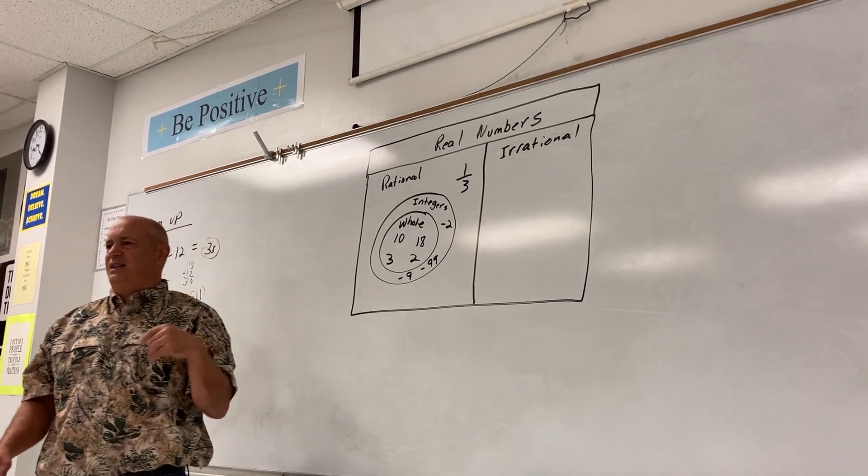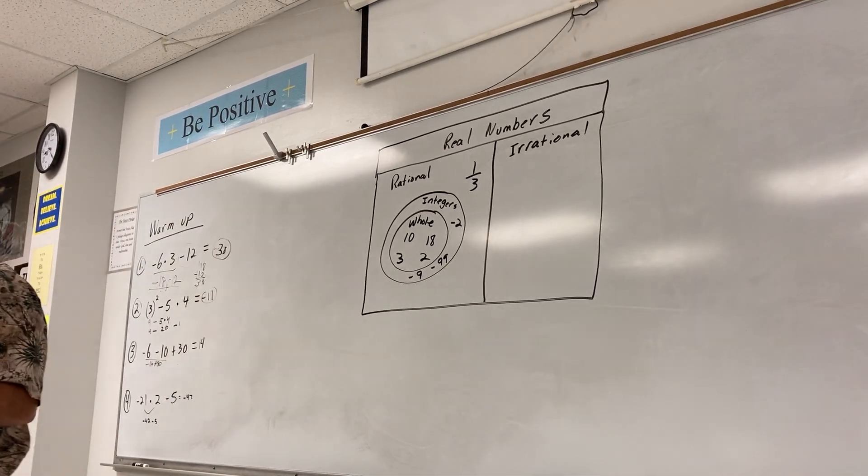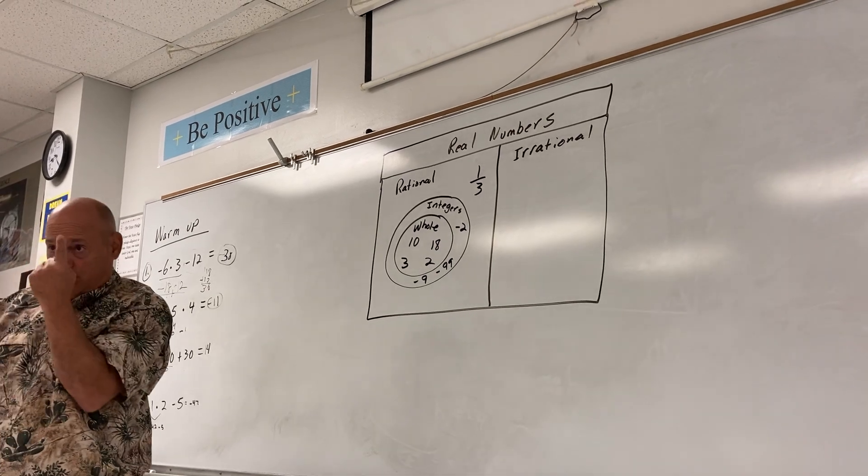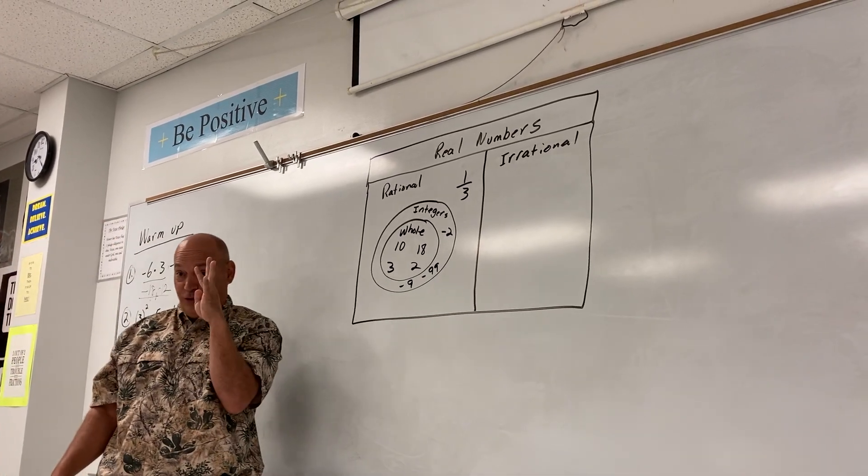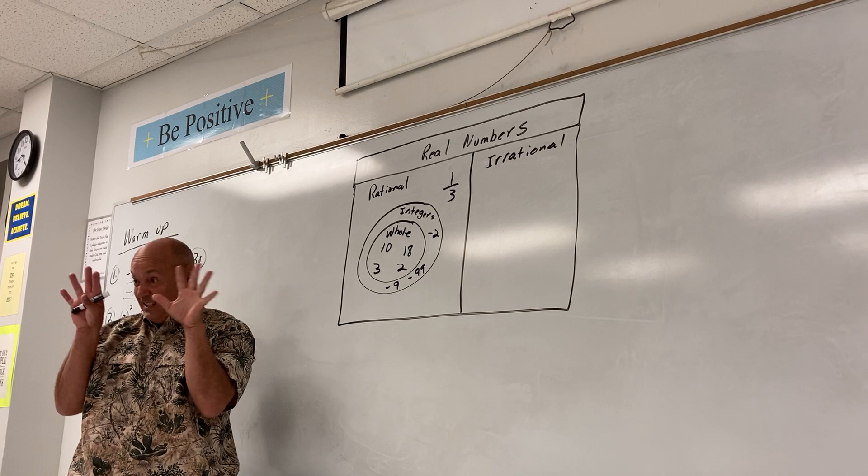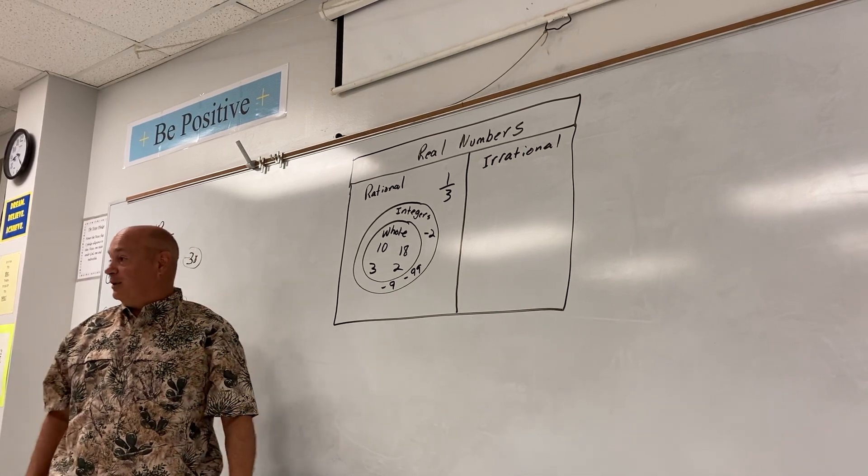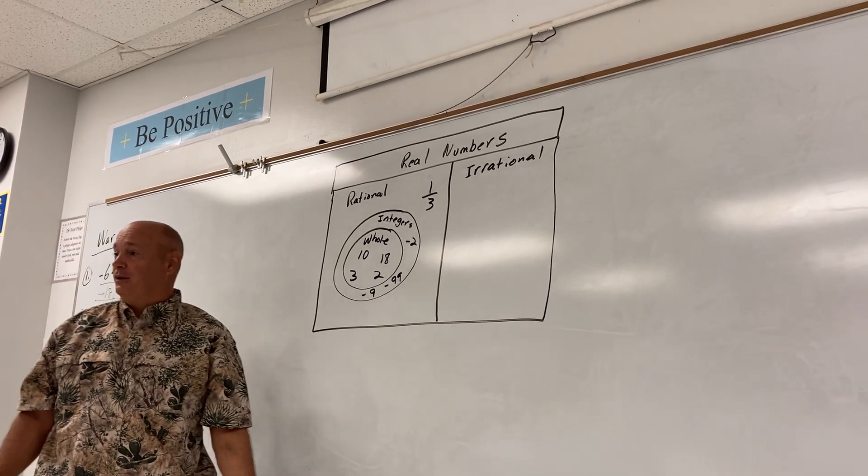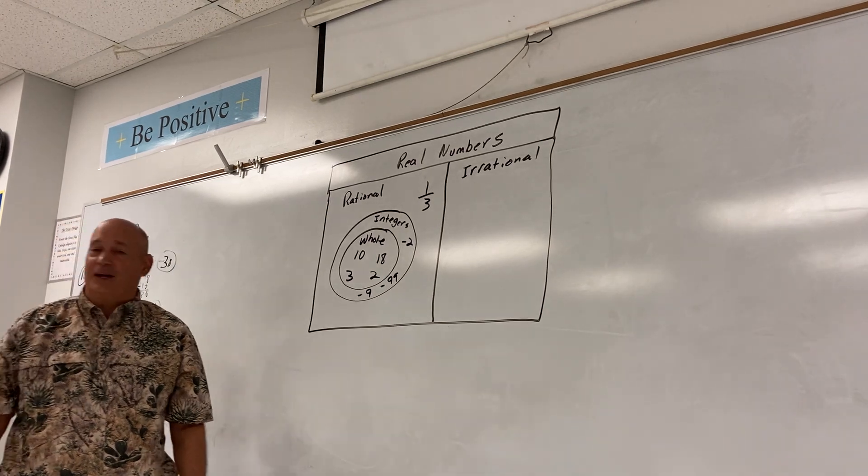Whole numbers are what I like to think of as the counting numbers you learned when you were a little kid. One, two, three, four, five, six, seven, eight, nine. Remember when you talk to kids. Y'all like my baby voice? Yes. It's pretty cute.